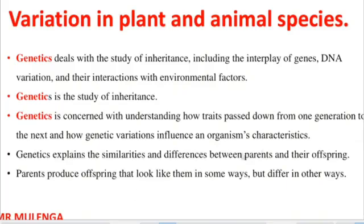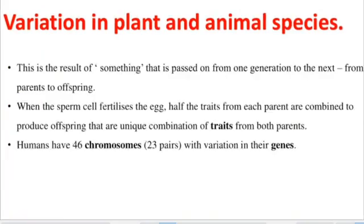What happens is that the parents produce offspring, and these offspring look like the parents in some ways, but in other ways they don't resemble the parents completely. This happens as a result of something that is passed on from one generation to the next, from parents to their offspring. When the sperm cell fertilizes the egg, half the traits from each parent are combined to produce offspring that have a unique combination of traits from both parents. A full human being has 46 chromosomes: 23 pairs inherited from the male parent and another 23 pairs inherited from the female parent.